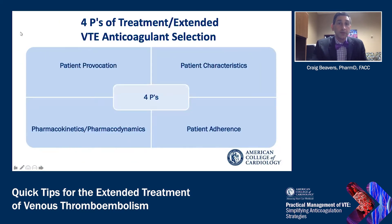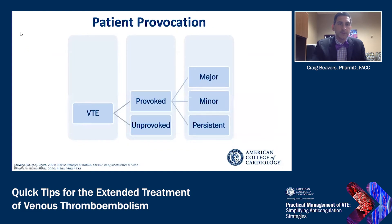As we discussed in the initial phase, there are four P's for treatment and extended phase VTE selection. In this instance, instead of patient presentation, the first P is patient provocation. Likewise, we also look at patient characteristics, pharmacokinetics, pharmacodynamics, and patient adherence.